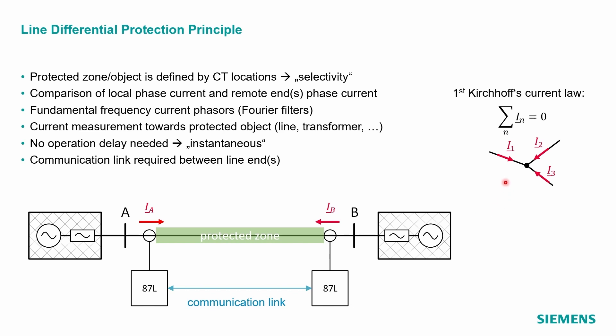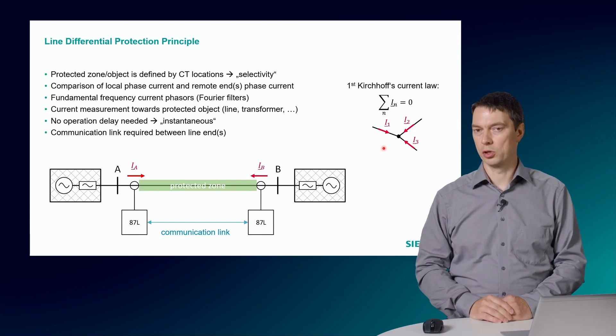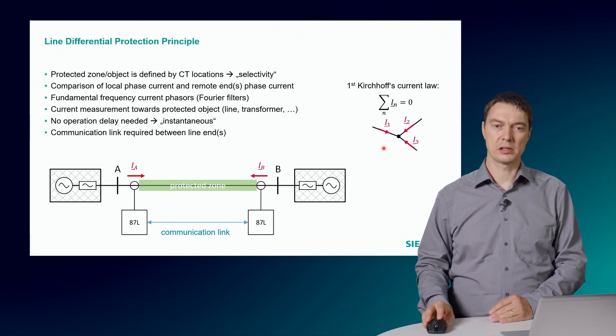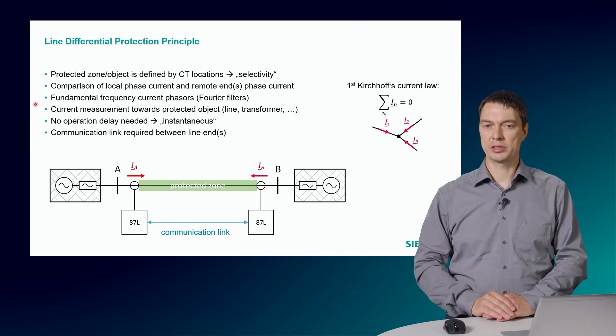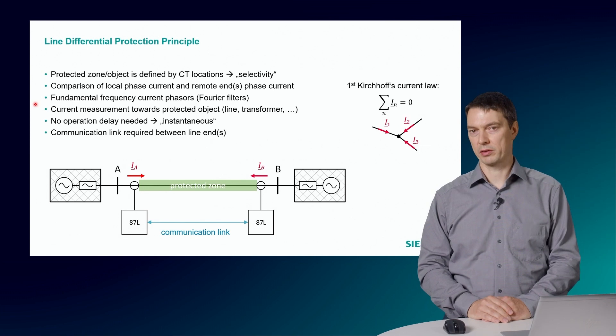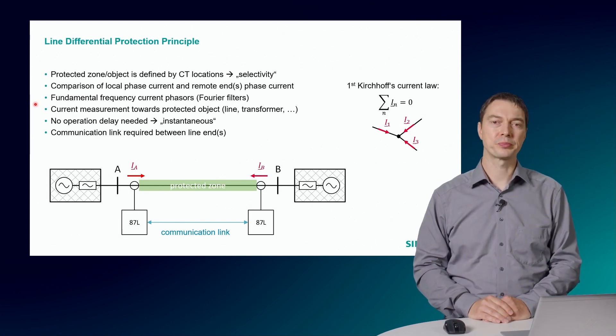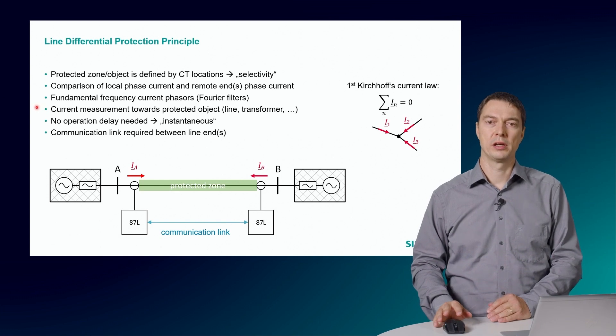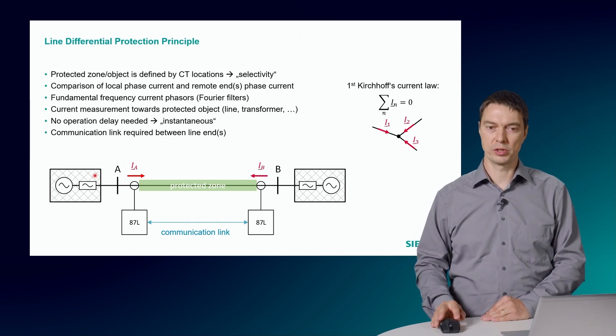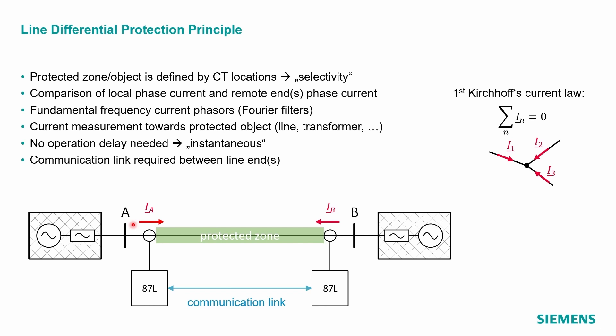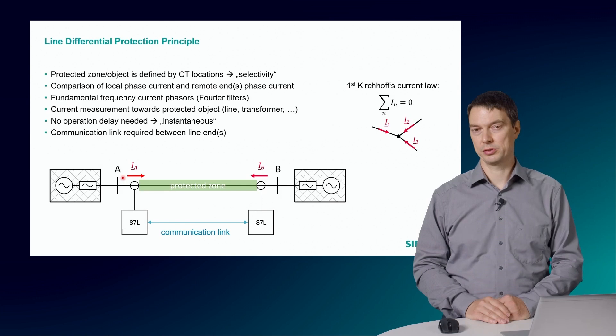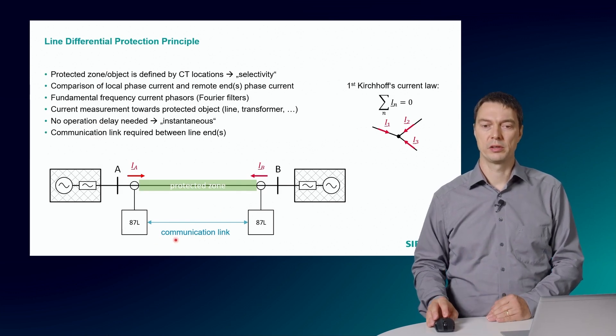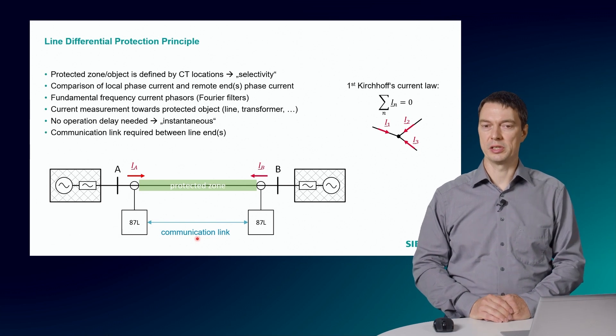And the Line Differential Protection Principle is based on comparison of the local phase and the remote phase currents. It applies the first Kirchhoff's law, which is the current law, which says that the sum which flows into a node always equals to zero. The fundamental frequency component is evaluated, which is obtained using Fourier filters. But there are also other methods on the market. The current measurement is normally defined towards the protected object, which is shown in the figure with the arrows pointing towards the protected object or into the line. There is no need for an operational time delay, so an instantaneous operation is obtained by this protection principle. But you need a communication link between the relays, which I already mentioned, which needs to be secure and safe.